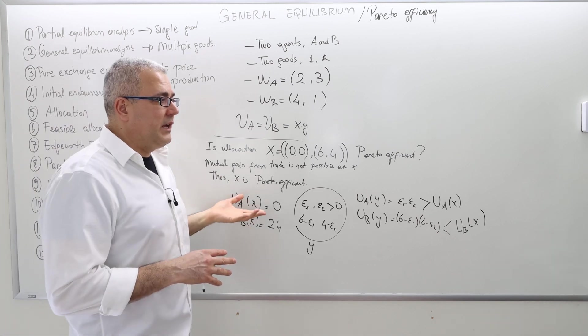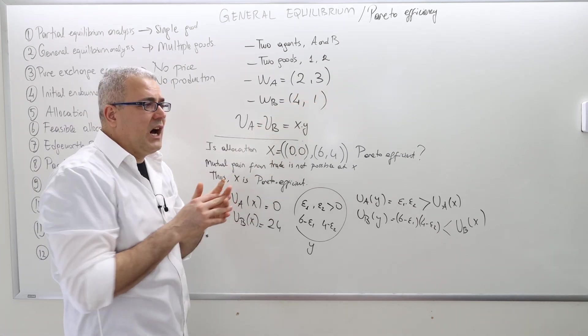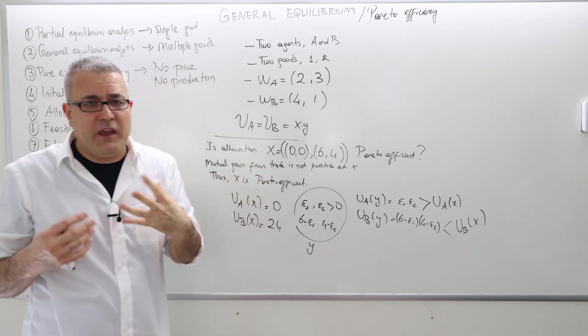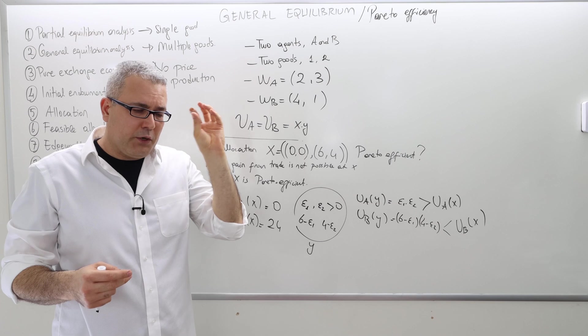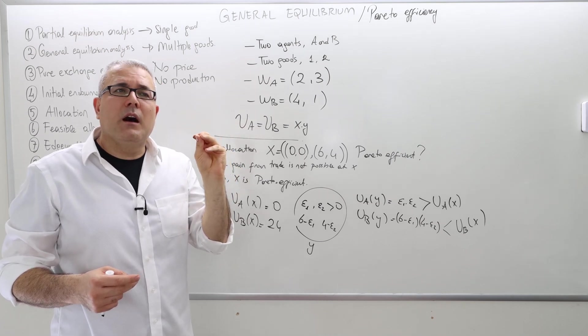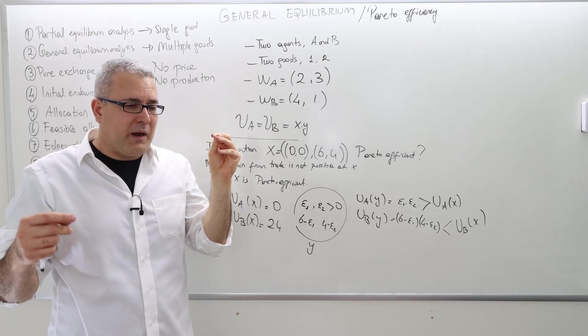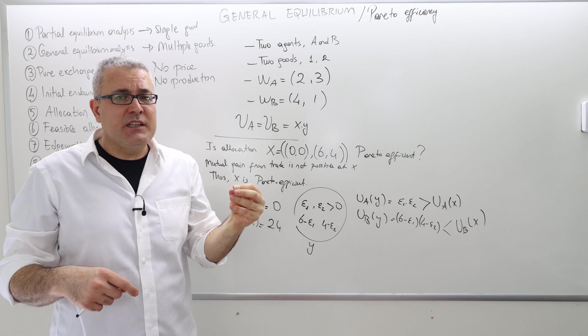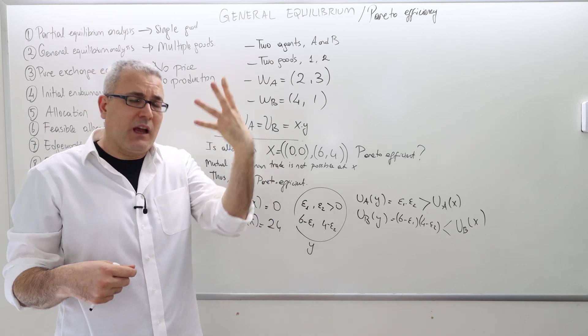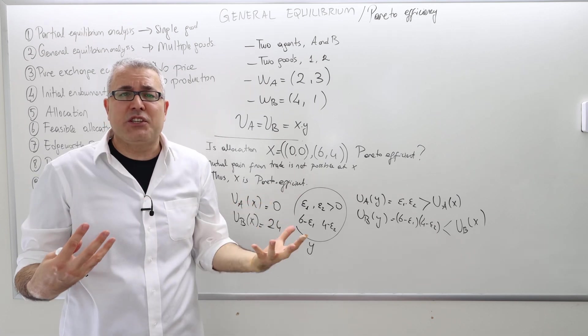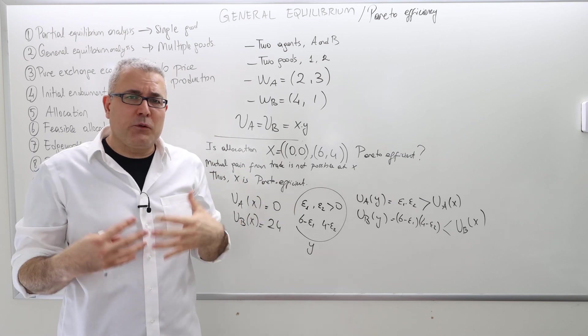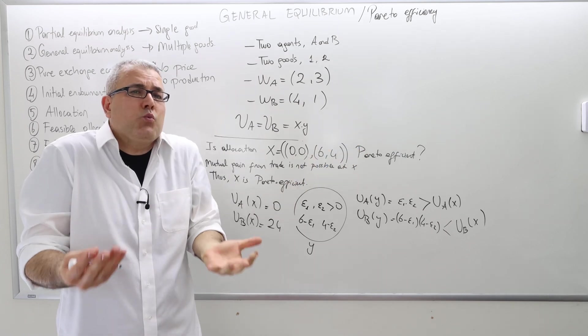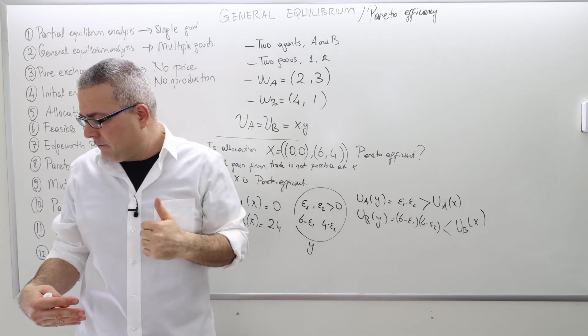The reason I like to give this example is that this allocation is clearly unfair because one agent gets nothing and the other agent gets everything. Pareto efficiency has nothing to do with fairness. Don't forget, Pareto efficiency asks the following question: Is it possible that by exchanging the goods, these agents are going to mutually gain from trade? If the answer is no, it's not possible, then this allocation is efficient. It's like they don't need to make any exchange. There is no win-win situation. If mutual gain from trade is possible, it means win-win situation is possible. But the current situation isn't win-win, therefore it's not efficient.